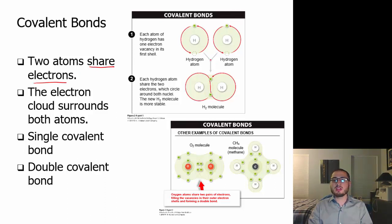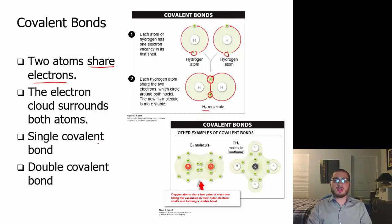In a covalent bond, atoms share electrons. A hydrogen atom wants to fill that void, and so does another hydrogen atom — so they share the one electron each has, and now they each have two. That creates a covalent bond, and now instead of having just a hydrogen atom, you have an H2 molecule. We call this a single covalent bond. We also have double covalent bonds as well.